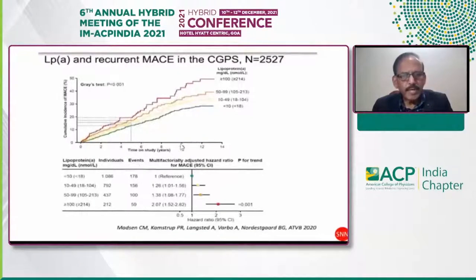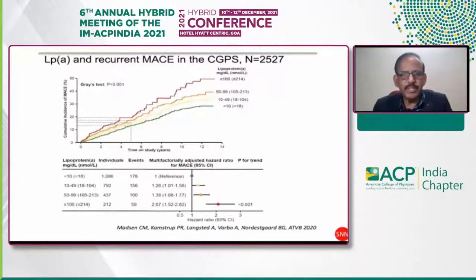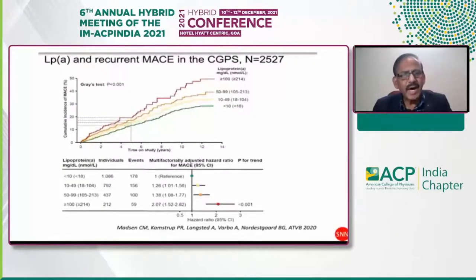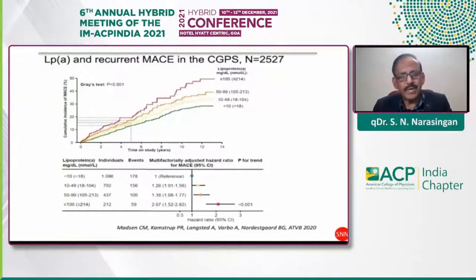Lipoprotein(a) is also involved in recurrent major adverse cardiovascular events. In the CGPS study, 2,527 people were recruited to observe recurrent MACE. Lipoprotein(a) levels more than 100 mg had a definitely higher tendency for recurrent MACE, with a hazard ratio of 2.07, compared to 1.38 for levels of 50–99 mg.